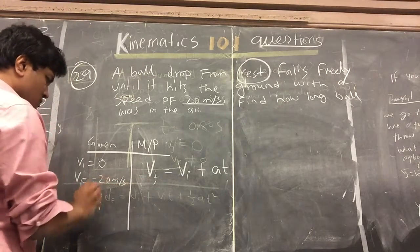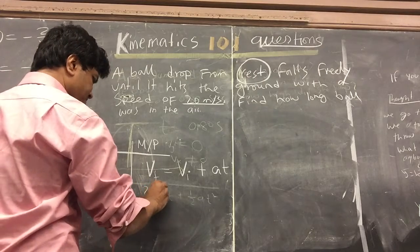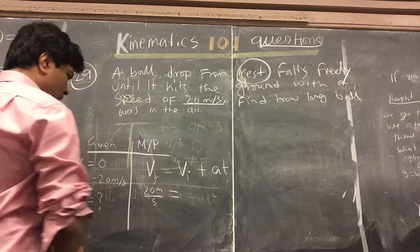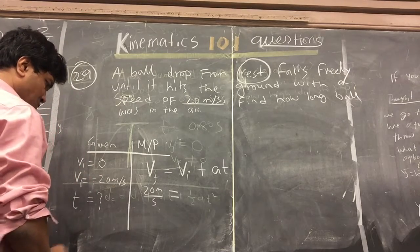We have the v final, which is 20 meters per second. We have the v initial, which is zero.